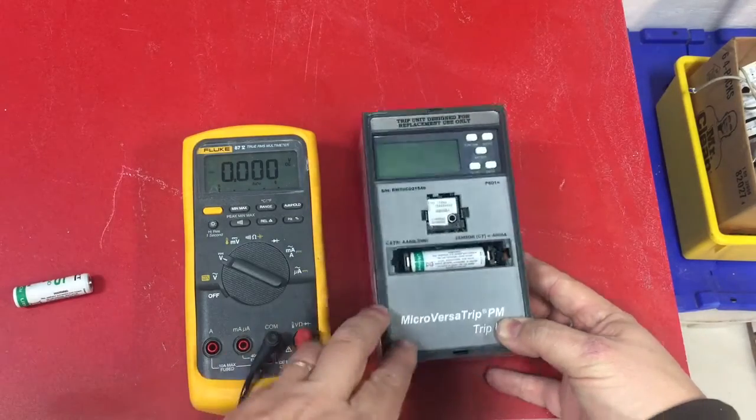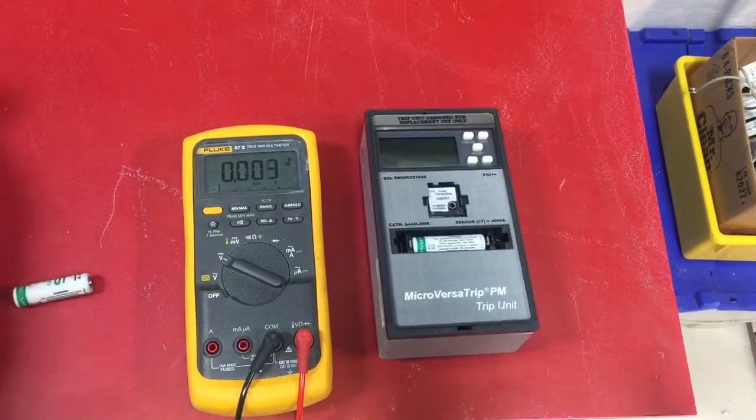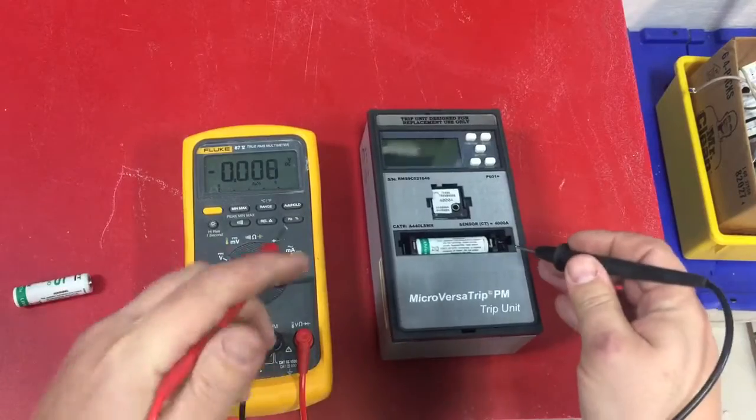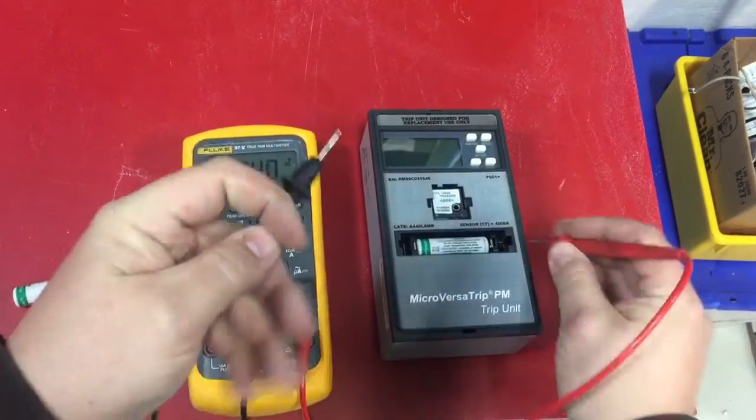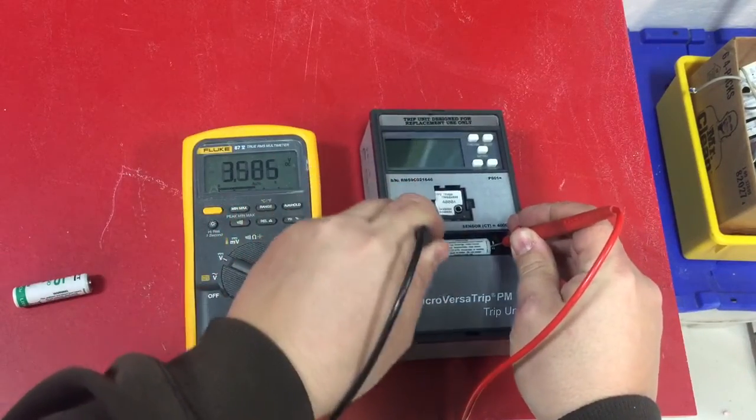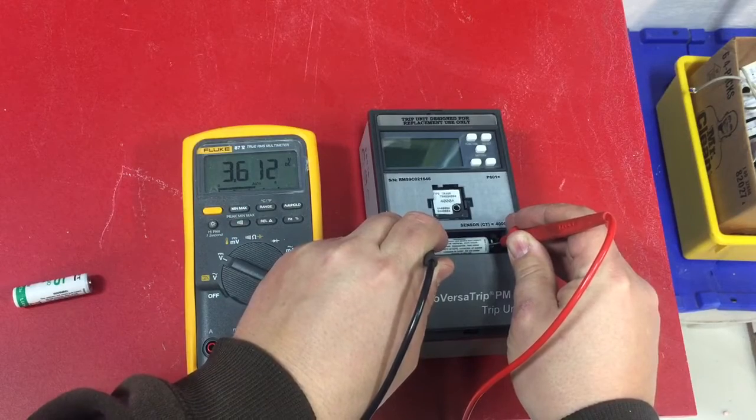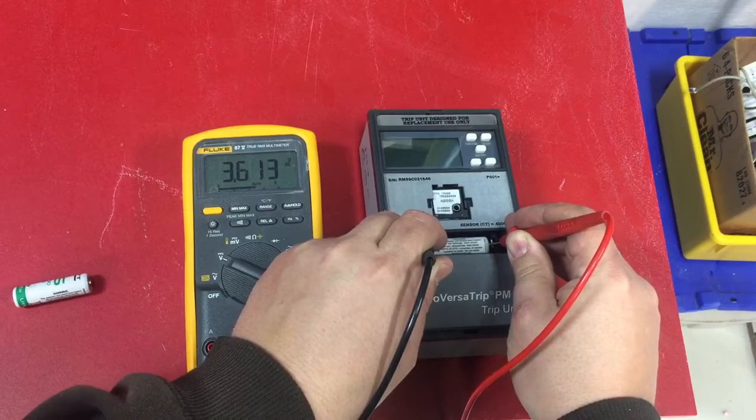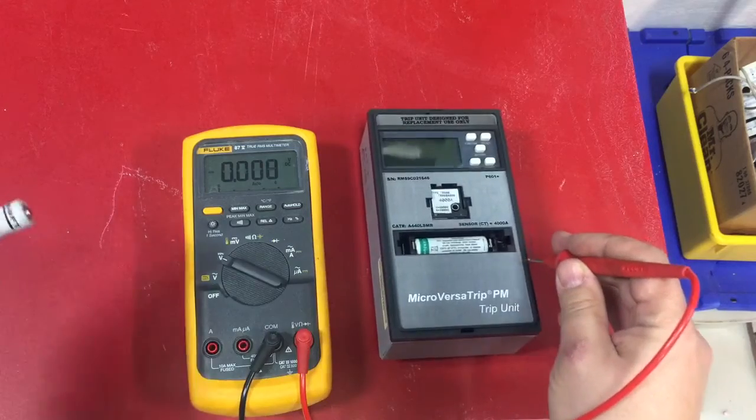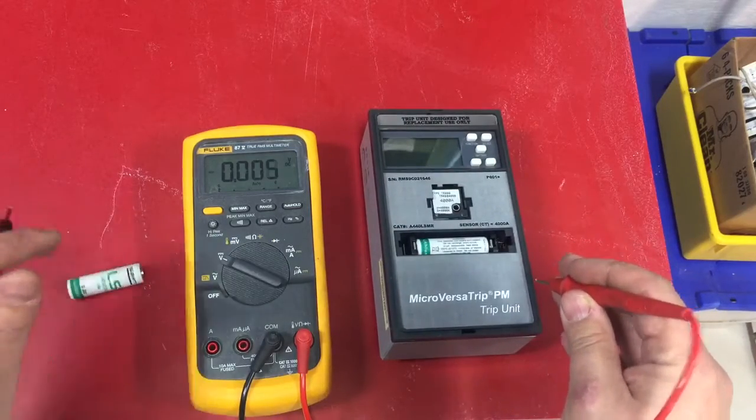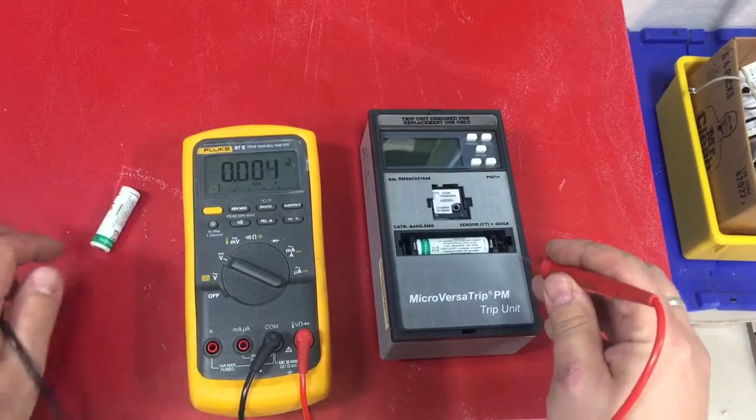So you might think the trip unit's bad, you're not sure. Check the battery. We test the battery like this - that reads 3.61 volts. It's a 3.6 volt lithium-ion battery. Seems like that battery is good, right?